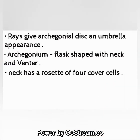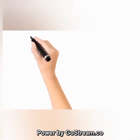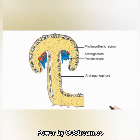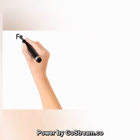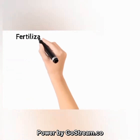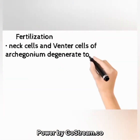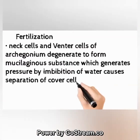A diagram of the archegoniophore is shown here. For fertilization: neck cells and venter cells of the archegonium degenerate to form a mucilaginous substance, which generates pressure by imbibition of water, causing separation of cover cells. Antherozoids, which reach by rain and are chemotactically attracted to neck cells, result in zygote formation.